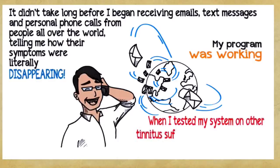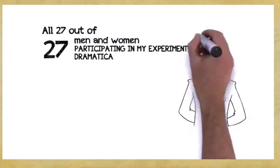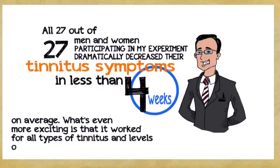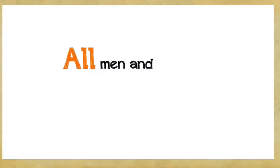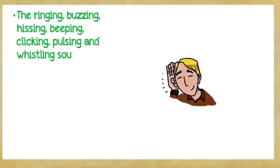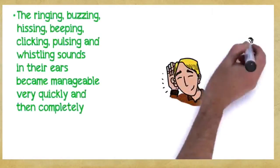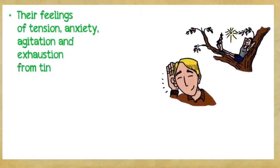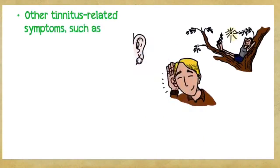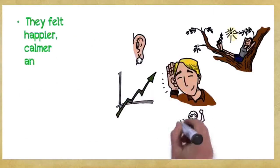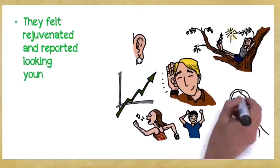When I tested my system on other tinnitus sufferers, it yielded the same shocking and groundbreaking results. All 27 out of 27 men and women participating in my experiment dramatically decreased their tinnitus symptoms in less than four weeks on average. What's even more exciting is that it worked for all types of tinnitus and levels of severity and for men and women of any age. All men and women who used this method experienced the following benefits. The ringing, buzzing, hissing, beeping, clicking, pulsing, and whistling sounds in their ears became manageable very quickly and then completely vanished, never to reappear again in less than 30 days. Their feelings of tension, anxiety, agitation, and exhaustion from tinnitus vanished. Other tinnitus-related symptoms such as mild to moderate hearing loss, pain in the ear, dizziness, and the feeling of fullness in the ear were completely eliminated. They felt happier, calmer, and more energetic. They felt rejuvenated and reported looking younger and more vibrant.